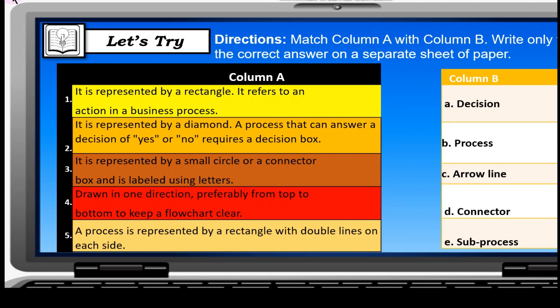Number one: It is represented by a rectangle. It refers to an action in a business process. Yes, the answer is B, process. Number two: It is represented by a diamond, a process that can answer a decision of yes or no, requires a decision box. Yes, the answer is A, decision.